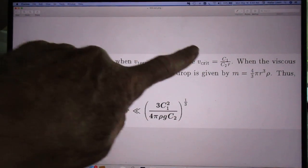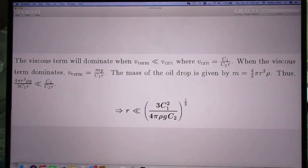Read with me. The viscous term will dominate when the terminal velocity is much smaller than the critical velocity. I mentioned in lecture 12 that the critical velocity is c1 divided by c2 times r.